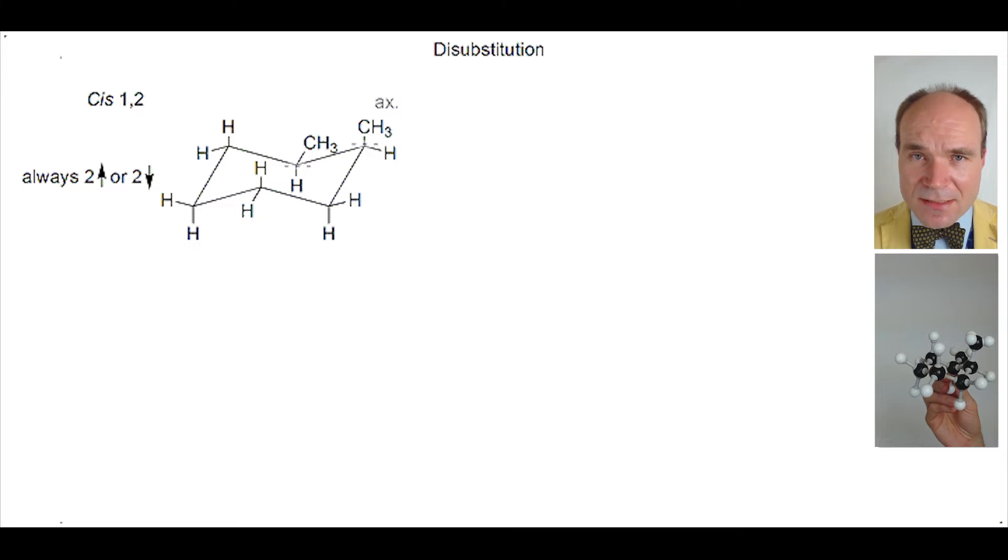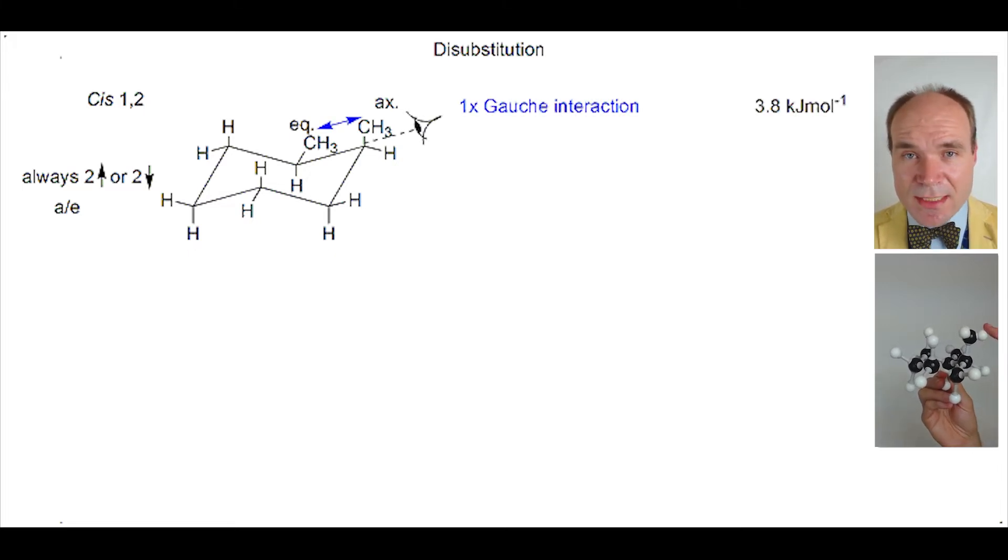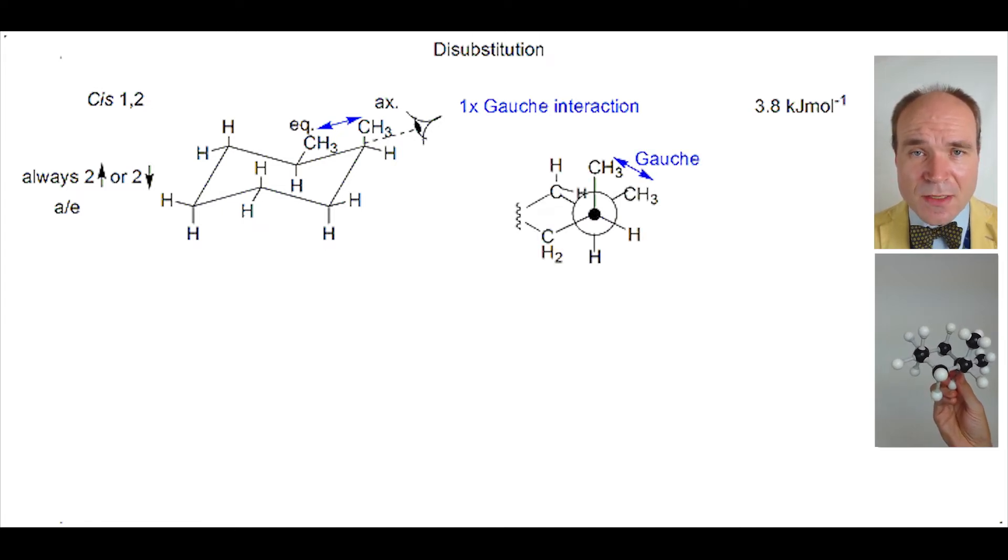One methyl group is axial, the other is equatorial. Let's look at the molecule and try to identify any significant steric strain here. One type of steric strain present is called a gauche interaction. It's between the methyl groups themselves and it becomes obvious why it's called gauche if we look at the molecule as a Newman projection. The two methyl groups have a gauche conformational relationship with each other. The gauche interaction adds 3.8 kilojoules per mole in energy to the molecule.